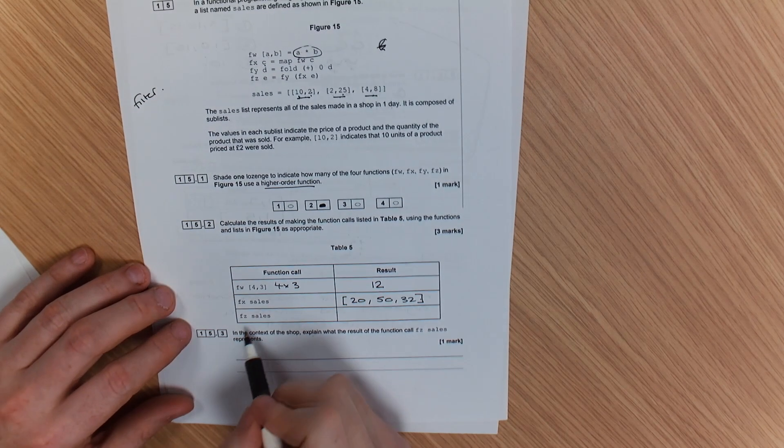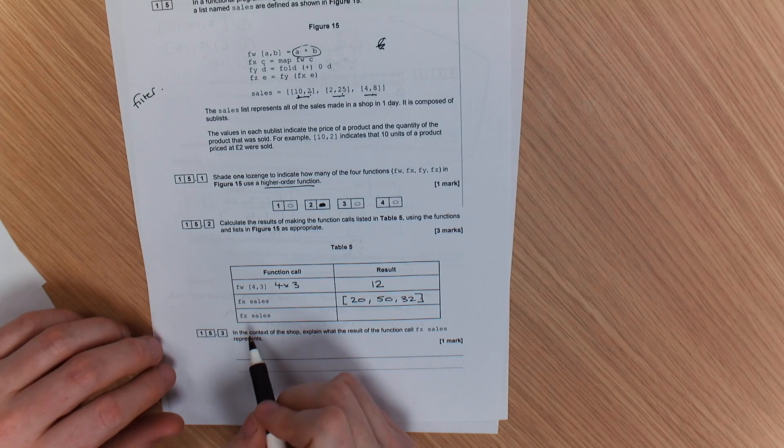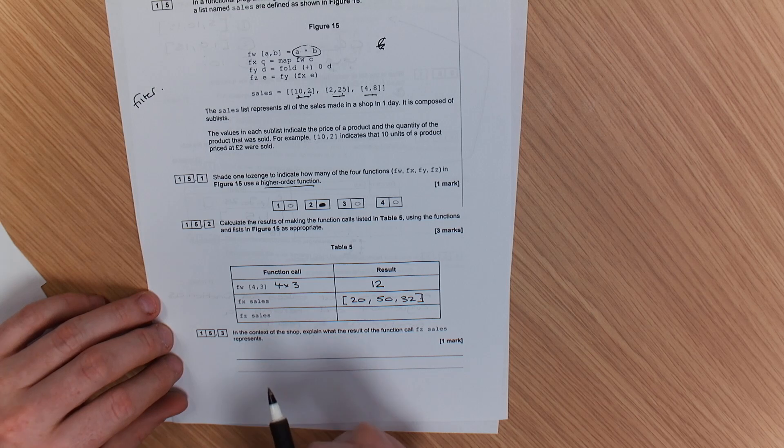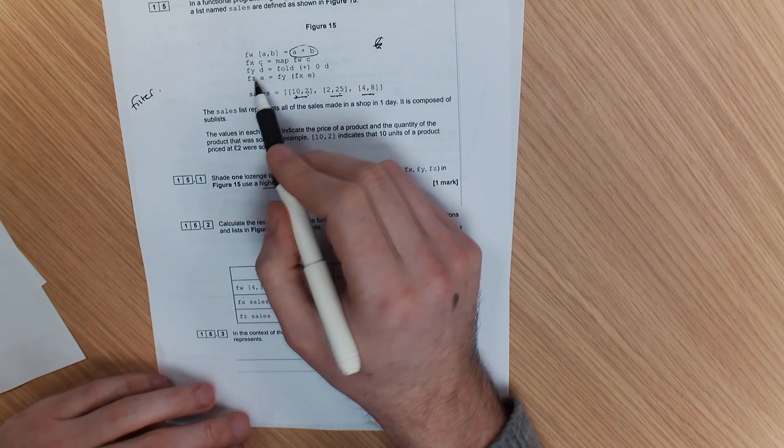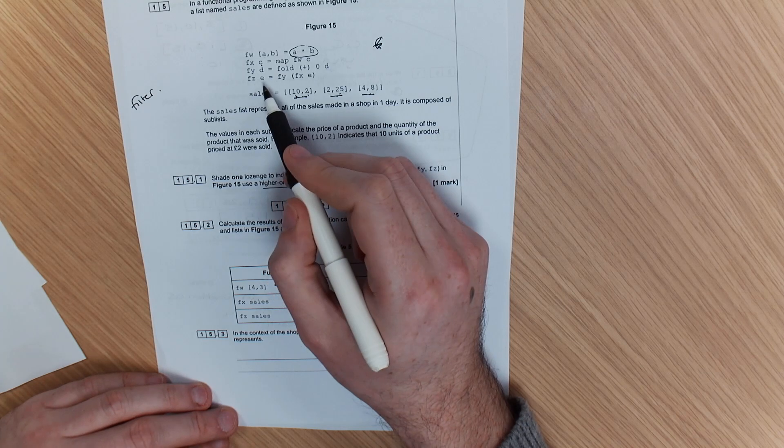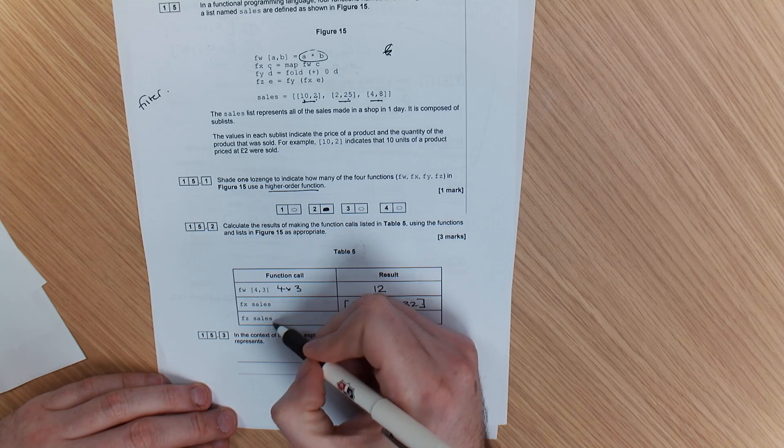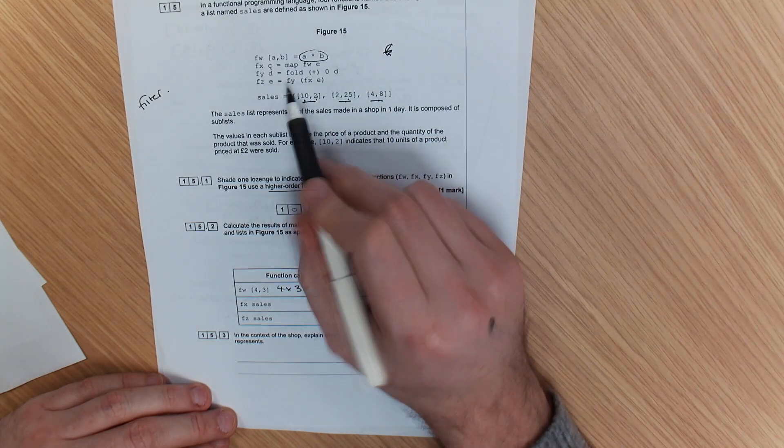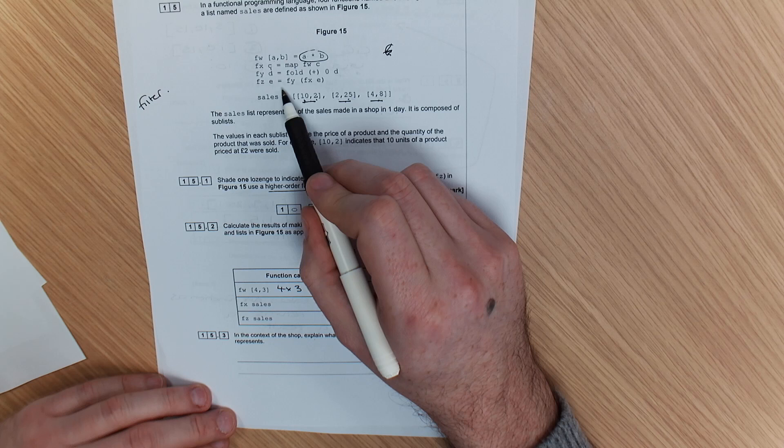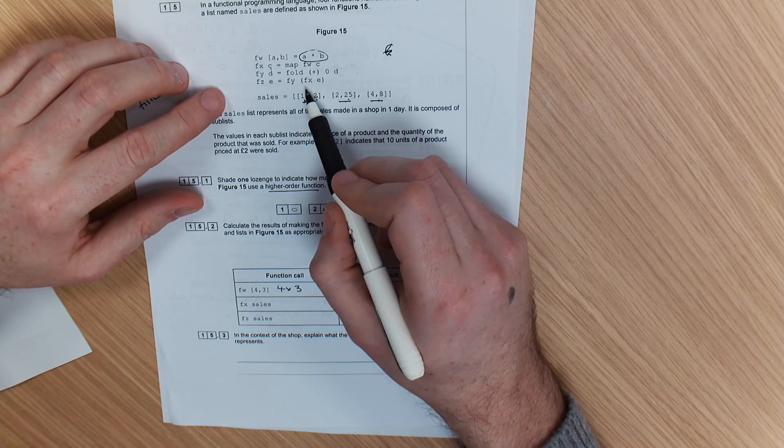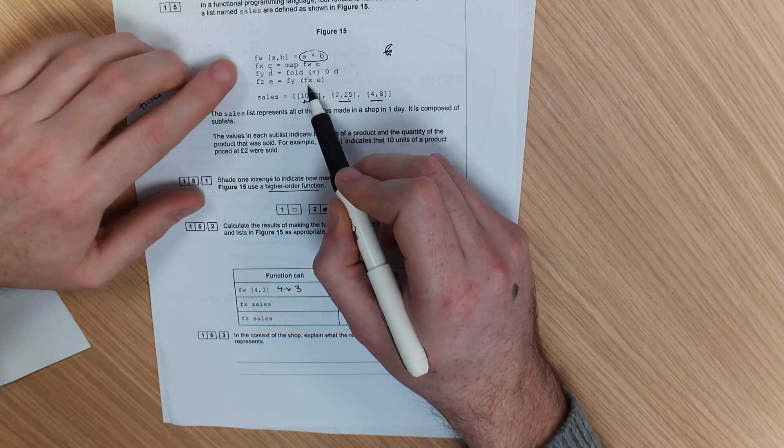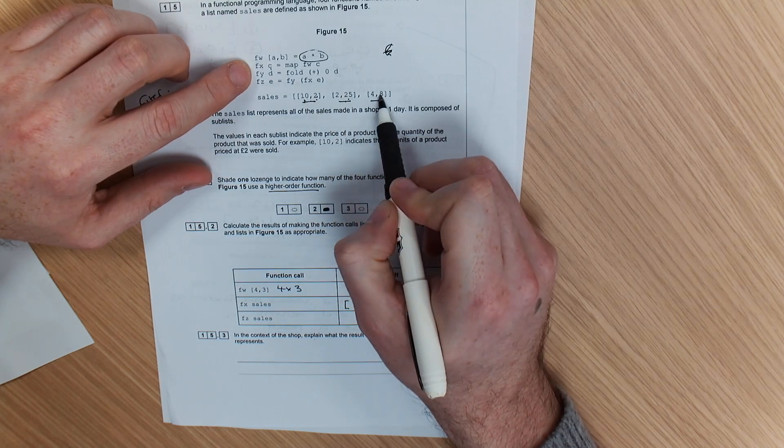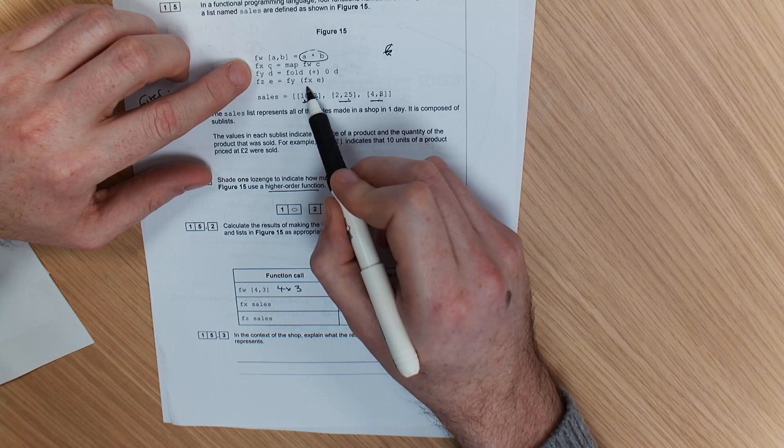Now, we've now got another one which may confuse you a little bit, but let's break it down slowly. What you've got here is FZ(e). In this case, we're using FZ(sales), so we've got our sales data that's gone in. And pay careful attention to this: we go with our brackets first, we are going to map each item, so we're doing this first, which is FX.